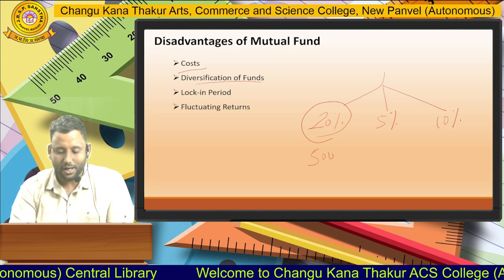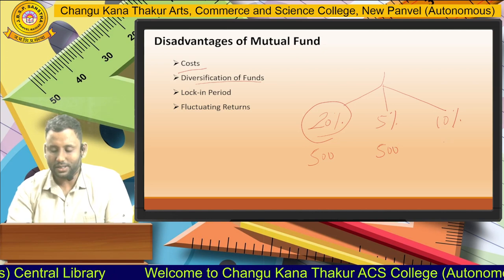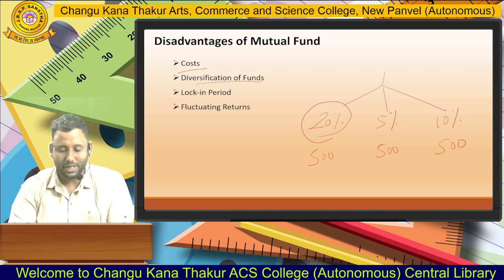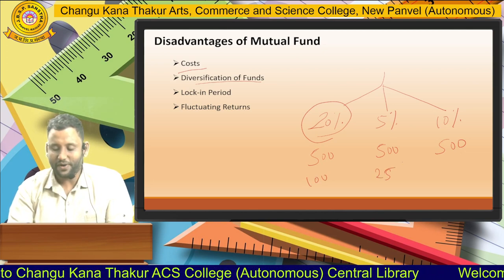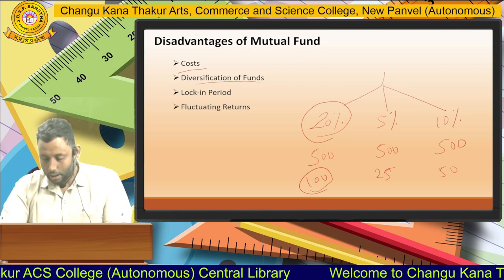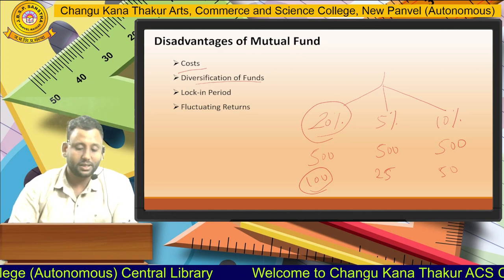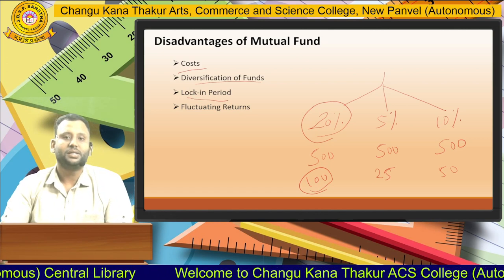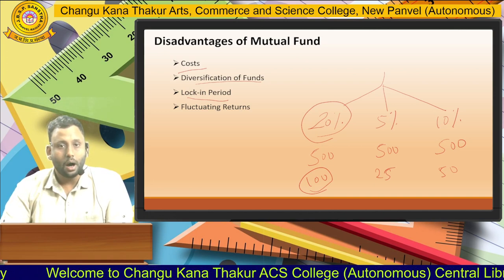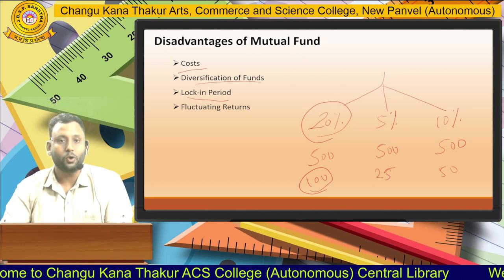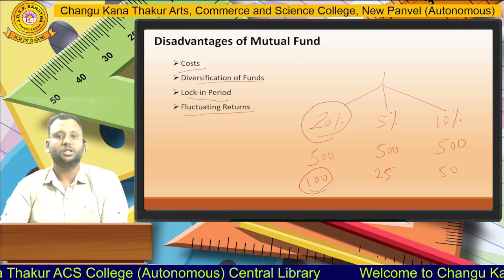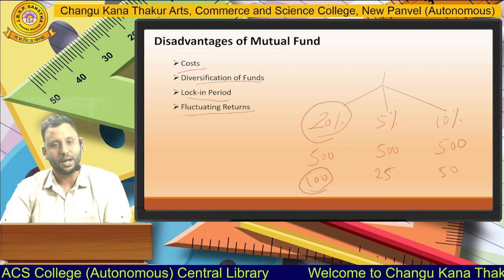For example, if you invest 500 rupees in each of three areas, in the first you get 20% that is 100 rupees, in the second only 25 rupees, and in the third only 50 rupees. So you have missed the opportunity to earn 100 rupees by concentrating. Third disadvantage is the lock-in period — some mutual funds have a lock-in period of three or five years, during which you cannot liquidate the money. Fourth is fluctuating returns — your returns are not fixed; they fluctuate depending on market conditions.